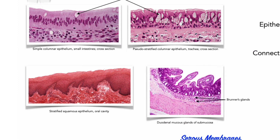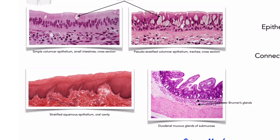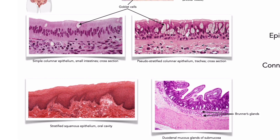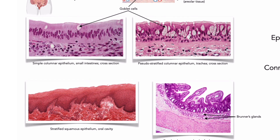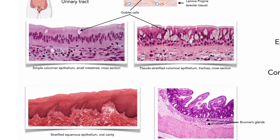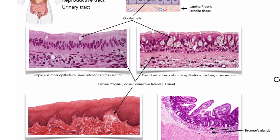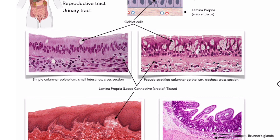Some mucous membranes are also supported by multicellular mucous-secreting glands located deep in the submucosal tissues. For example, duodenal glands called Brunner's glands support the mucous membranes of the small intestines. Other notable mucous membranes include the distinct transitional epithelium of the urinary bladder. In mucous membranes, the connective tissue immediately beneath the epithelium is a loose connective tissue or areolar tissue called the lamina propria.